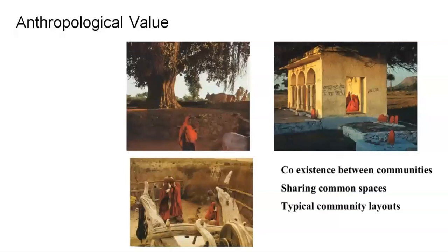There is an agglomeration of communities that stay together. They have similar houses and their own group spaces used for collective activities. They share a lot of common spaces and have typical community layouts. A classic example I speak about in my classes is a tree and an otla that becomes the panchayat, a small garbhagriya that becomes the temple, and a well used for fetching drinking water that becomes not only a community space but is vital for wellness and health.